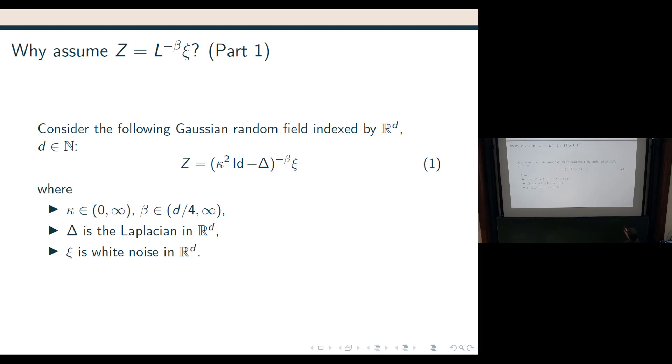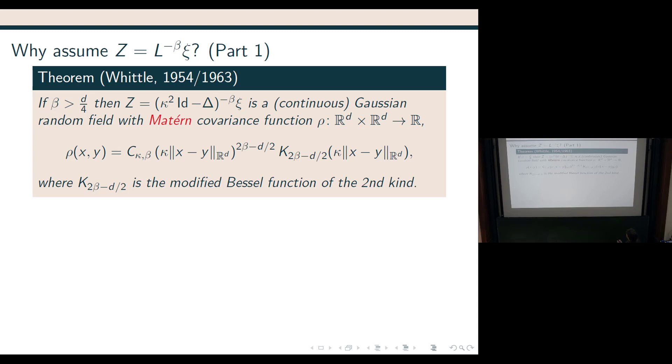And, well, this was actually in R^D, so not on a domain, but if you want to do numerics, of course, you have to be on some bounded domain. And then Whittle proved, over a course of two articles, 1954 and 1963, that if you define your Gaussian random field in this way, with beta greater than d over 4, then you get a continuous Gaussian random field with actually, at that time already known covariance function, with the Matérn covariance function rho, which looks not so tasty, but actually all we've got here is kappa times the distance between x and y to the power 2 beta minus delta over 2. And here we have modified Bessel function with, as an argument again, kappa times this distance. And some constant here, doesn't really matter.